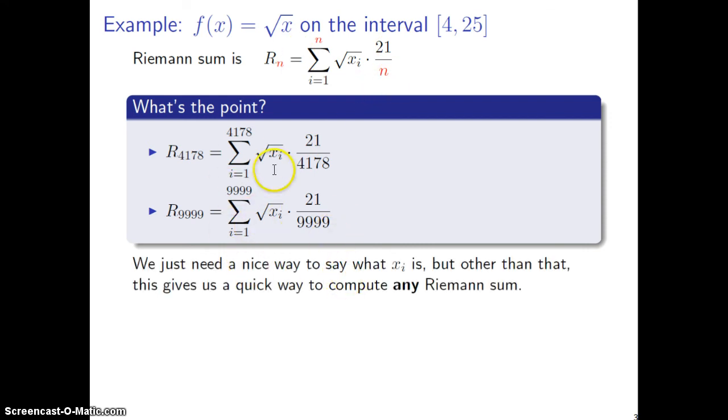Now in order to finish this type of problem, there's one other thing: we need to find a nice way to quickly say what x_i is, we'll talk about that. But other than that aspect, this gives us a very quick way to compute any Riemann sum. You can plug in n early on, or you can just wait to plug in n. The whole point of waiting to plug in n is you might want to find R_n for different values of n really quickly.